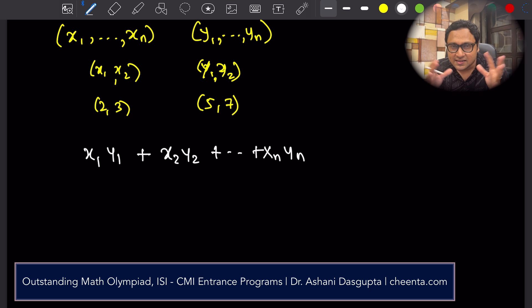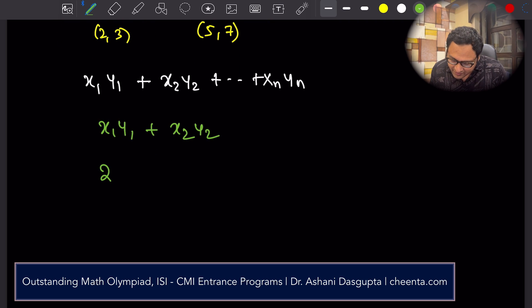You want to process it in an easier way? Do it for two dimensions: x1, y1 plus x2, y2. You want to further make your brain tax-free? Just do it with numbers: 2 into 5 plus 3 into 7. 2 into 5 is 10, 3 into 7 is 21. So, 10 plus 21, 31. That's the dot product of these two points. It's a single number.